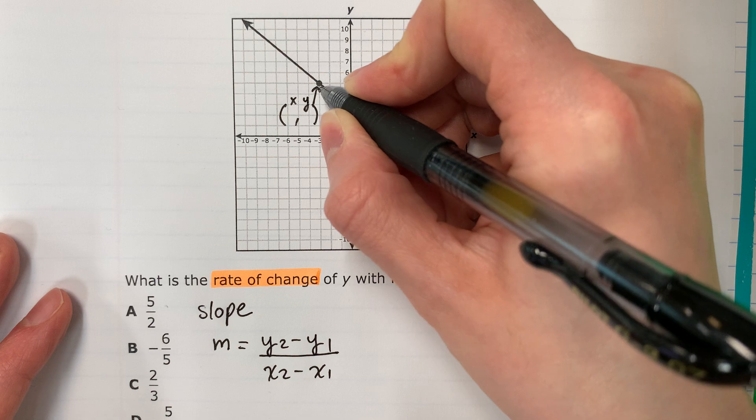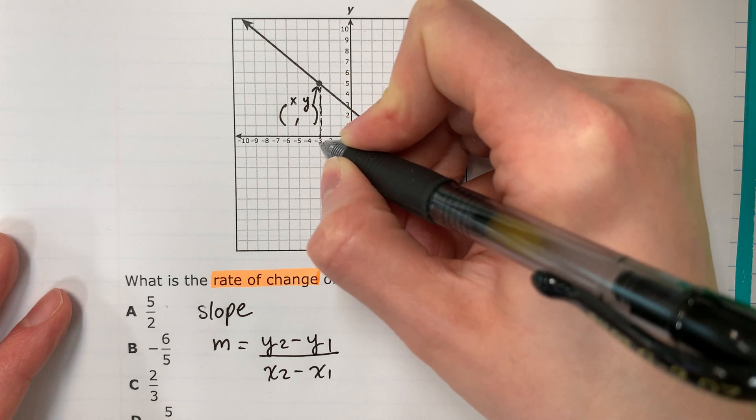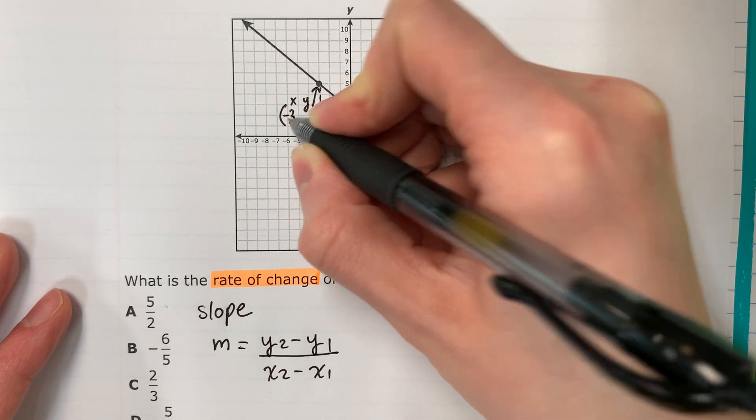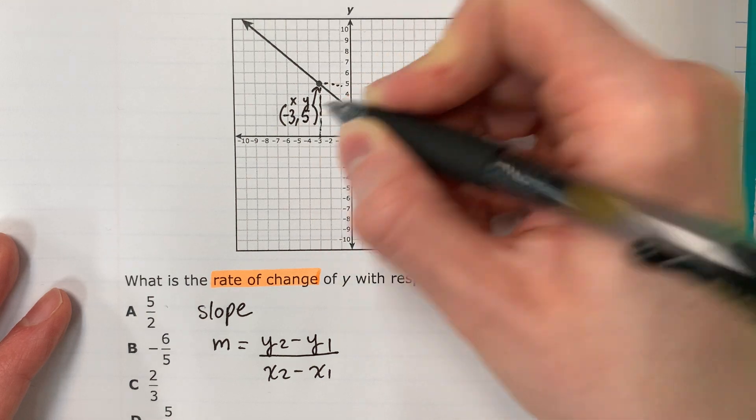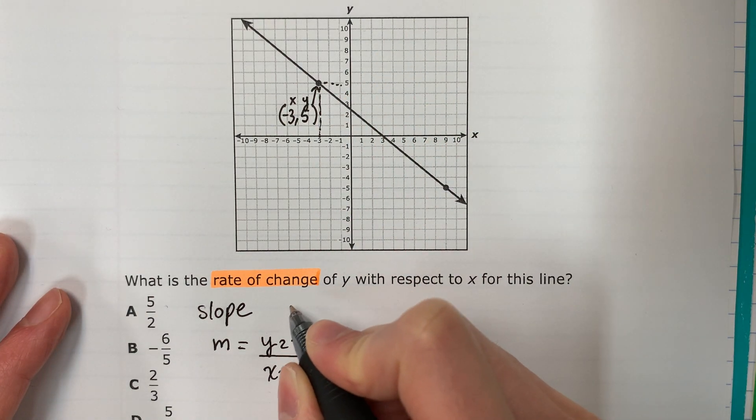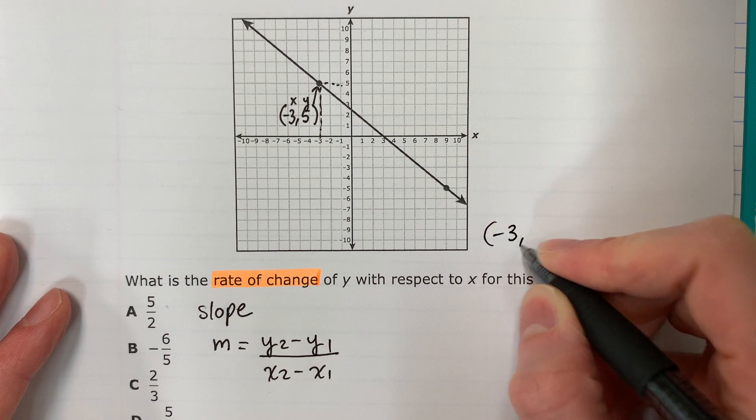So I'm going to use this one. Remember, x, y. So this is x negative 3, and y 5. I'm going to write that down. So I'll put it here. Negative 3, 5.